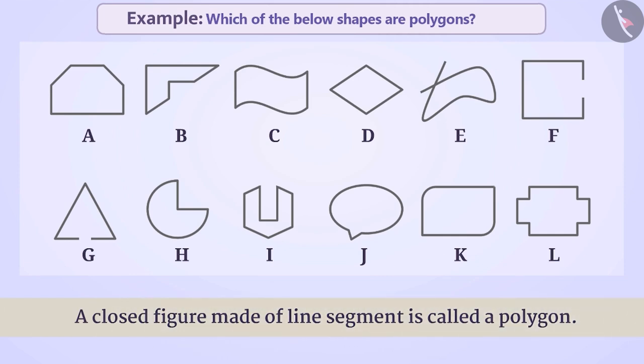On this basis, we can say that a closed figure is a polygon if all its sides are line segments.